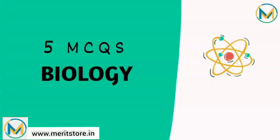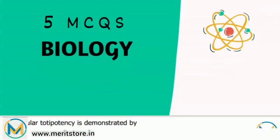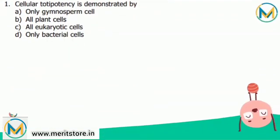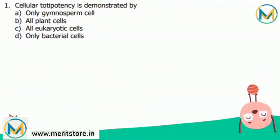First question: cellular totipotency is demonstrated by only gymnosperm cells, all plant cells, all eukaryotic cells, or only bacterial cells? Totipotency is the ability of a single cell to divide and produce all of the differentiated cells in an organism.